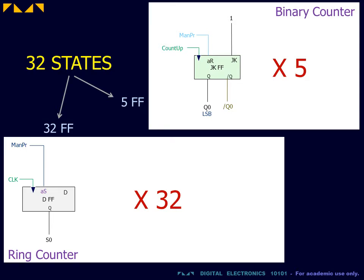This advantage increases greatly with the number of states. Thus, a sequence of 32 states would require a 32 flip-flop ring counter, but a 5 flip-flop binary counter.